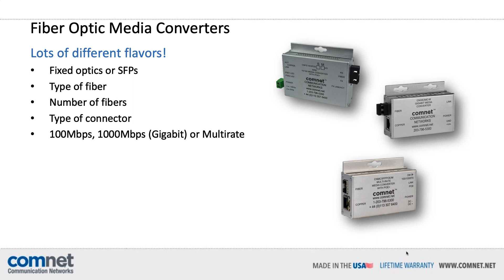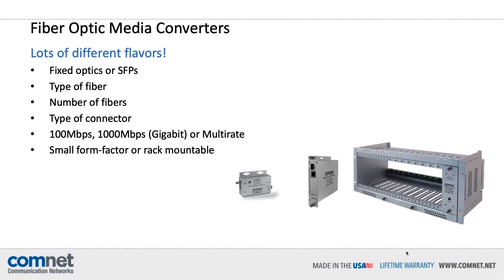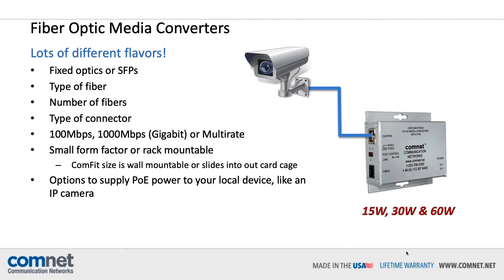You also have to decide on the form factor for the media converter. They come in a mini size, a medium mini size, and a full ComFit card size. The minis are good for fitting in small locations like enclosures or the mounting arms or back boxes of IP cameras. The ComFit cards can be shelf or wall mounted or slid into a 14-slot card cage with no modifications. The last option to consider is whether you need Power over Ethernet at the remote location for your camera or other IP device. ComNet has options for 15 watts, 30 watts, or even 60 watts for outdoor-rated IP PTZ cameras.